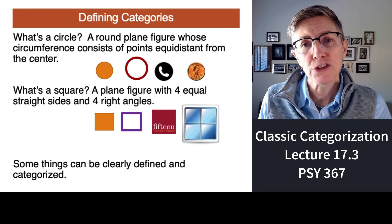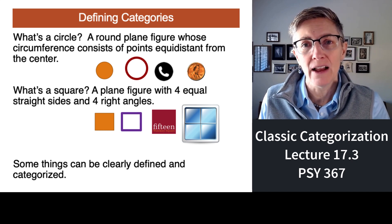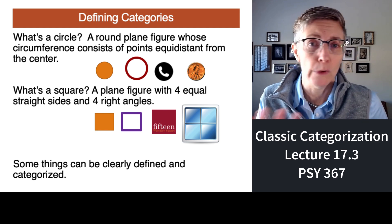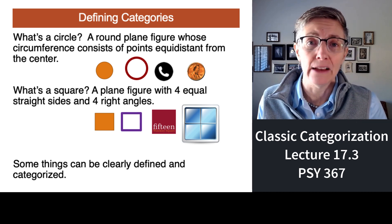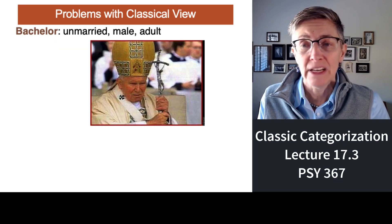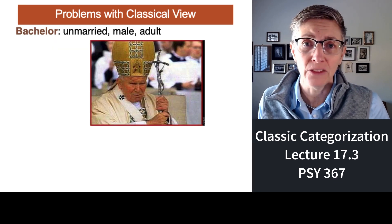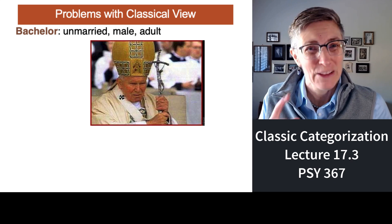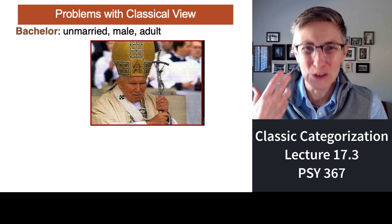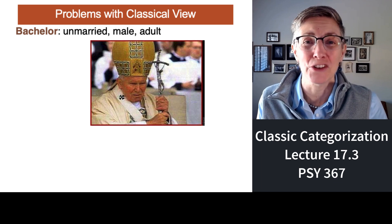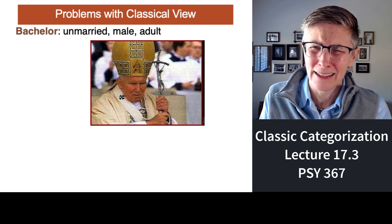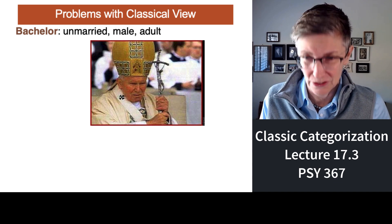But what if I asked you to define a bachelor? That would be easy — a bachelor, by definition, is an unmarried man. But here's an unmarried man: the Pope. Catholics would know that the Pope is not somebody you think of when you think of the category of bachelor. But he is, and he's not — the categories are hard.